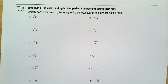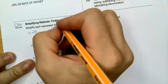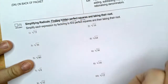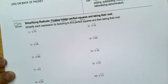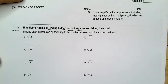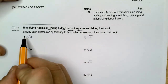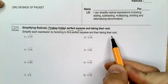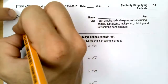This is just some practice on simplifying radicals. When you are simplifying a radical, what you want to do is find hidden perfect squares, take their root. Simplify each expression by factoring to find perfect squares and then taking their root.